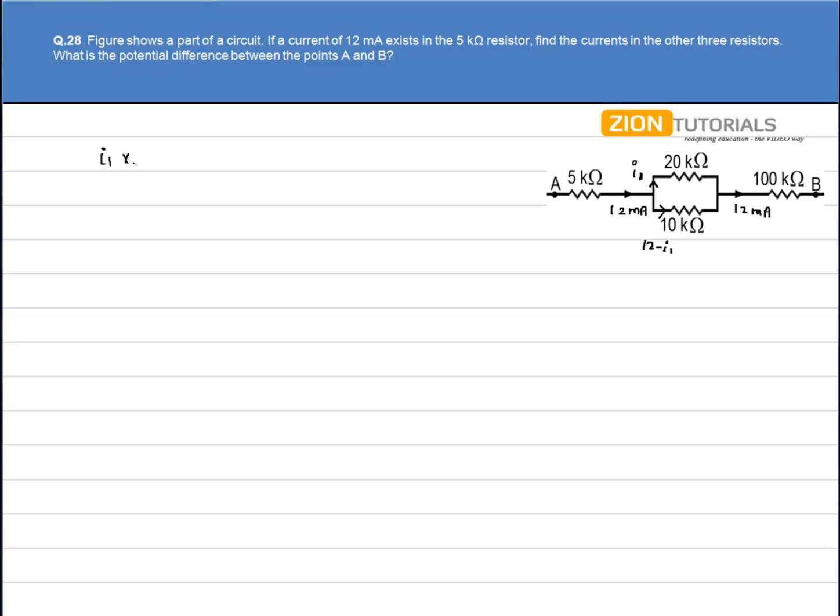So I1 × 20kΩ equals (12-I1) × 10kΩ. Dividing by 10, we have 2I1 equals 12-I1. Therefore, I1 comes out to be 4mA.